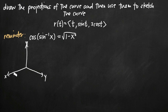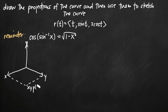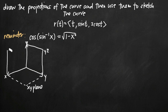We have three planes formed by our three coordinate axes. If I fill in this plane, this plane is formed by the x-axis and the y-axis, so this is the xy coordinate plane. I also have the yz coordinate plane here, and I have the xz coordinate plane here.